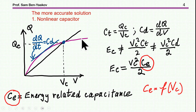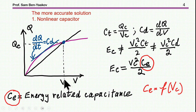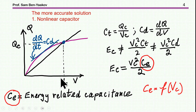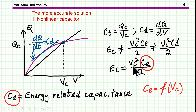For a non-linear capacitor, we can actually define three types of capacitance. First, the total capacitance — the ratio between the total charge at the end and the voltage at that point. Second, the derivative or local capacitance — the slope at any given operating point, which is of course a function of the voltage. But these are not sufficient for energy calculation. For energy, we need a third type: the energy-related capacitance.